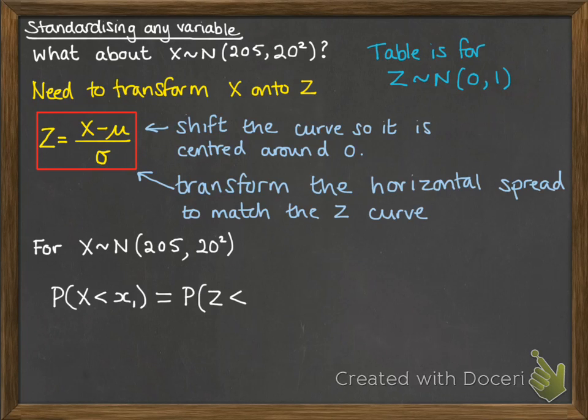If we apply this transformation to our x distribution, we will get the equivalent of what would happen in z. So for this one that we're talking about now, this 205 and 20, if we want the probability that x is less than a particular value of x1, we transform that into the z equation using that bit in the red box. So we would do the x value take away 205, divide it by 20, and that tells us what value to look up on our z table.